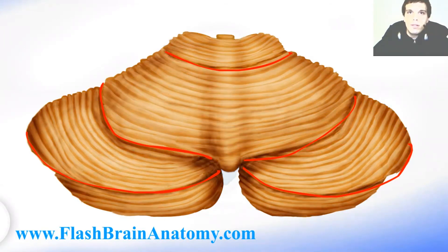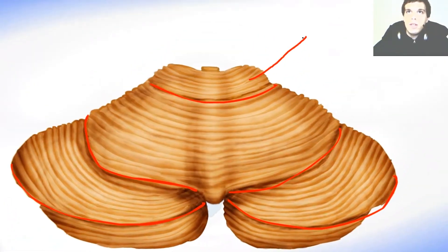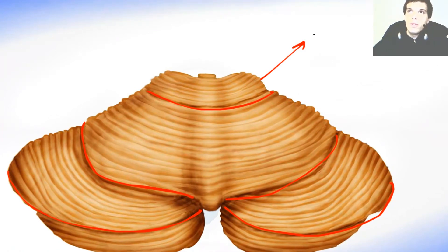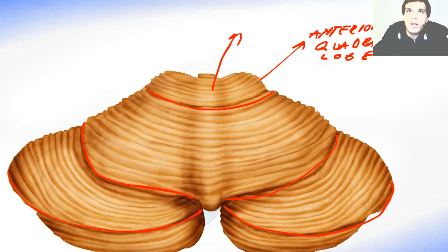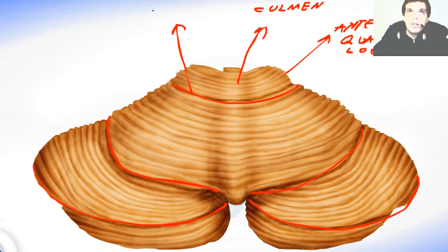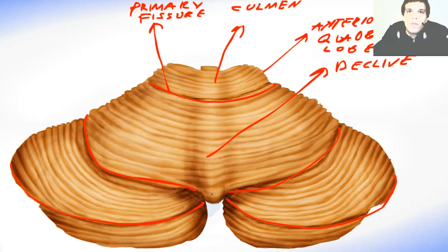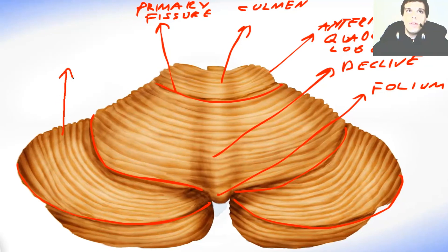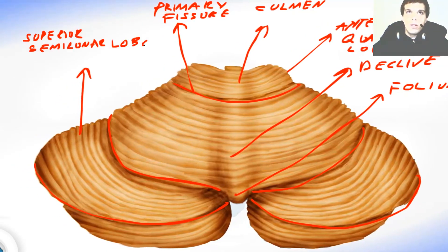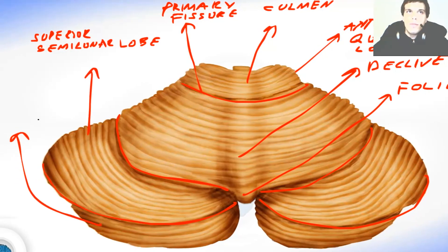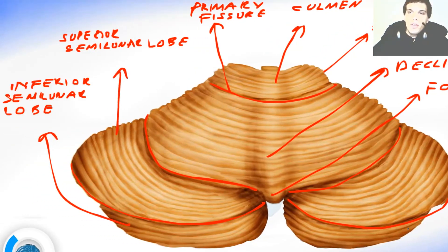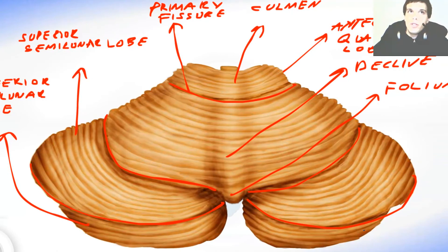Now I've photoshopped this a little bit and let's write this all down. This was the anterior part of the quadrangular lobe. This was the culmen. Then we had the primary fissure over here. Then comes the clivus and the folium somewhere over here. This was the superior semilunar lobe, and this was the inferior semilunar lobe. The fissure that divides the inferior and superior semilunar lobes is called the horizontal fissure.